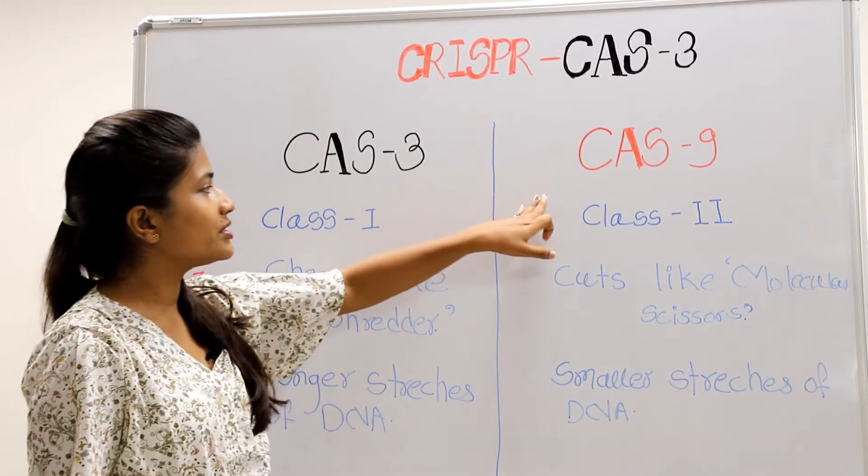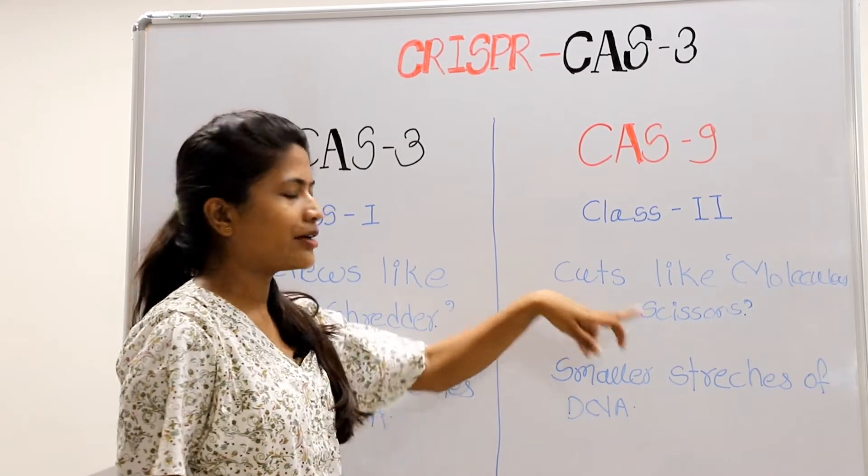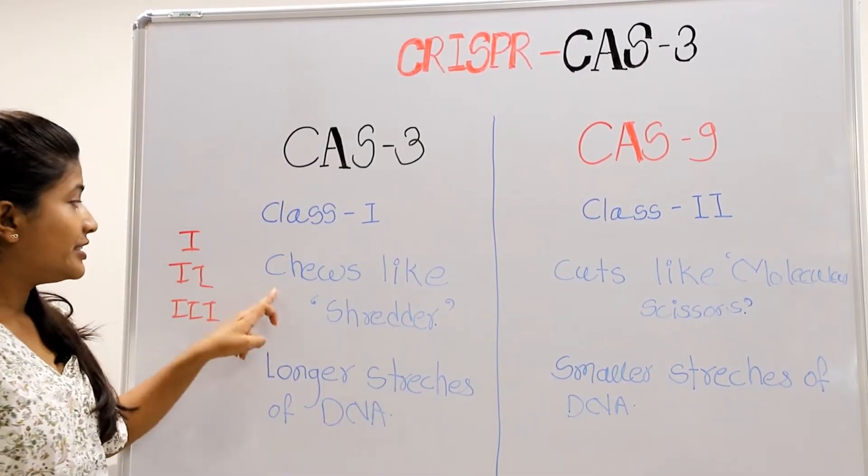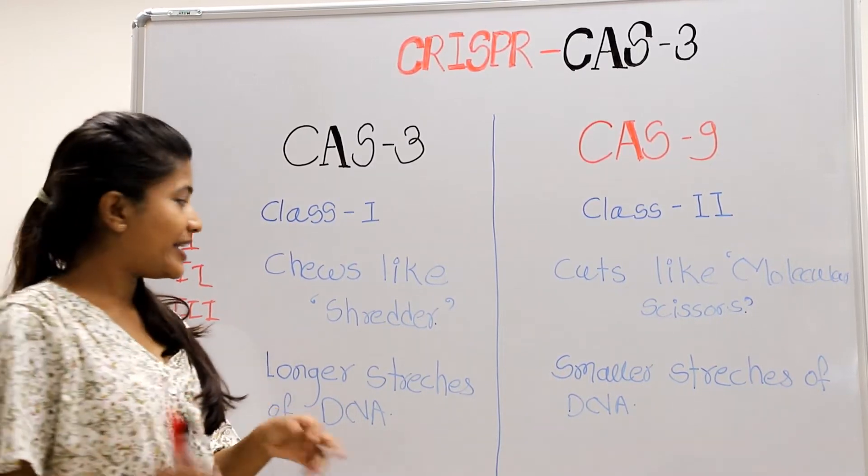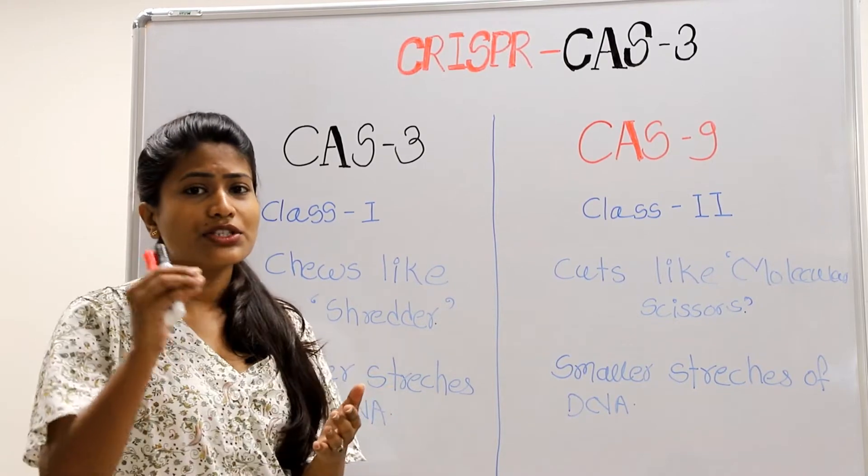If we compare both systems, the Cas9 neatly cuts DNA like molecular scissors, and in case of Cas3, it chews the DNA like a shredder. Shredder means it cuts DNA into smaller fragments.